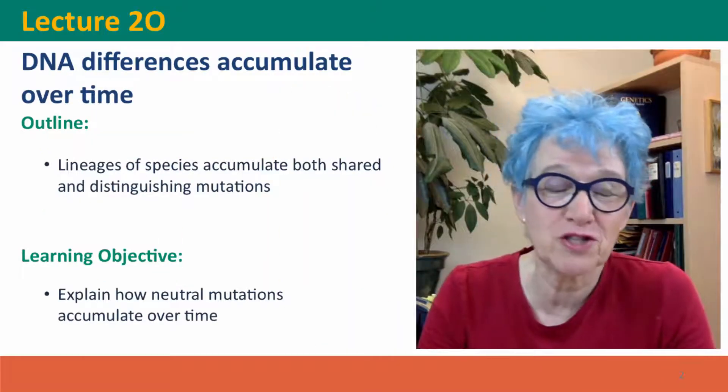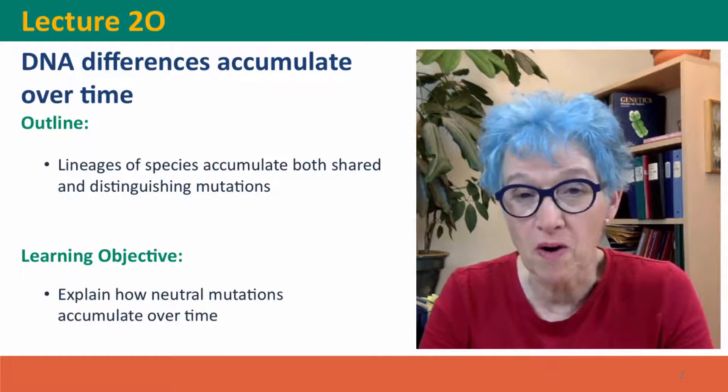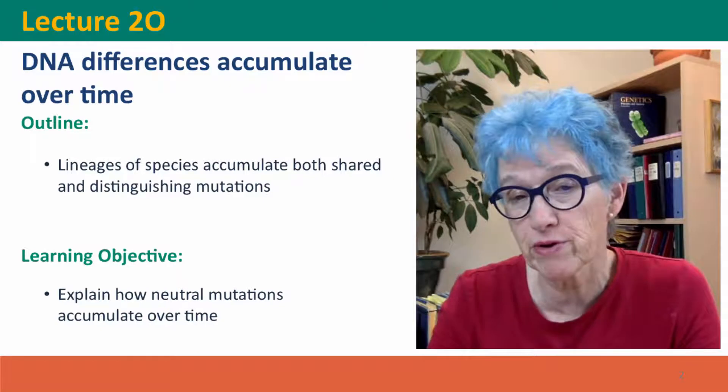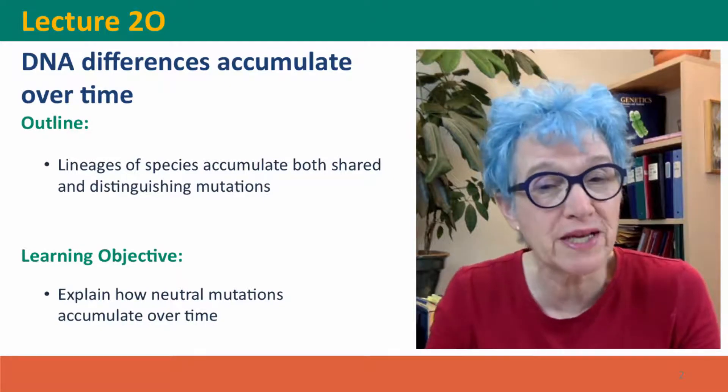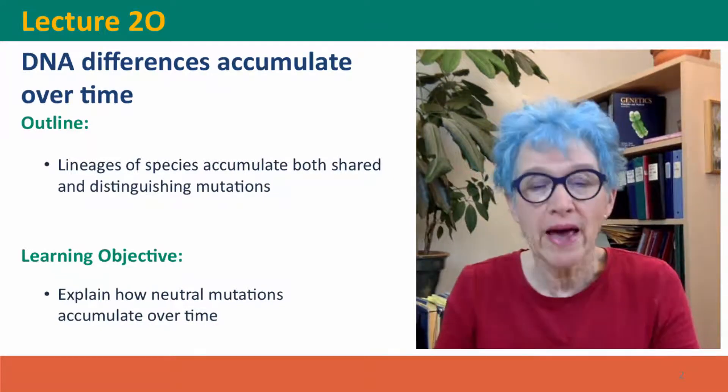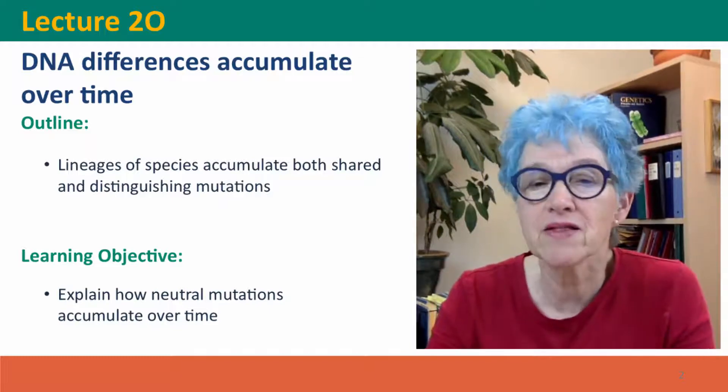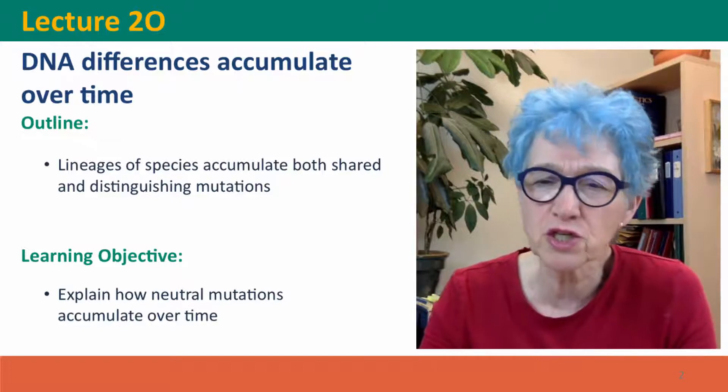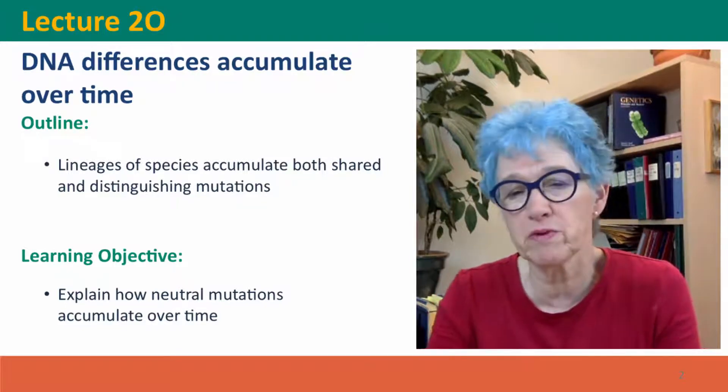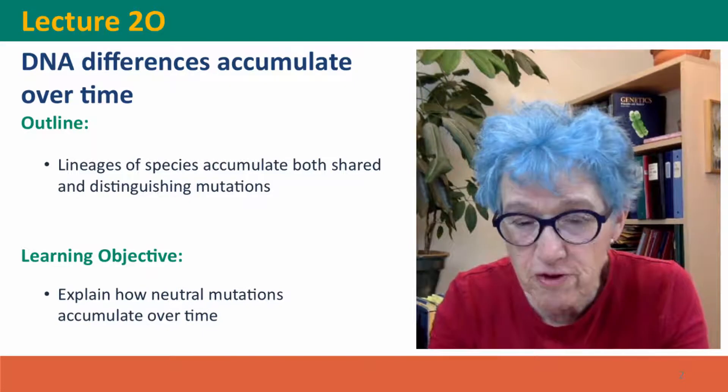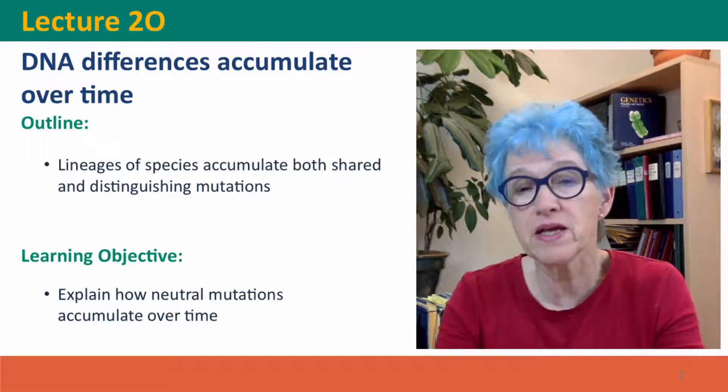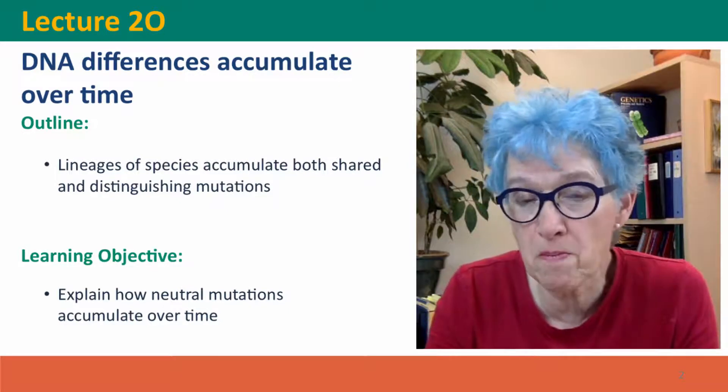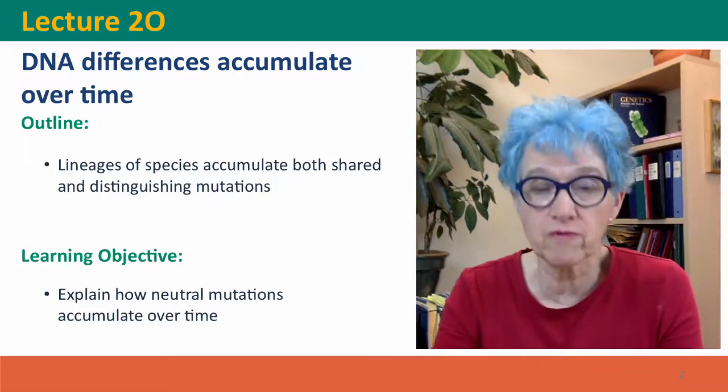Hi, everyone. Welcome back to Useful Genetics. This is lecture 2.0. Here we're going to talk about how DNA sequence differences accumulate through time. We're going to pretend that we can go back in time and watch sequence differences accumulate. This is going to let us understand that there are shared mutations between close relatives and distinguishing mutations that separate different evolving lineages. Then in lecture 2p, we're going to use this to make inferences from modern sequences about evolutionary history.